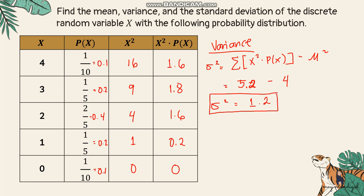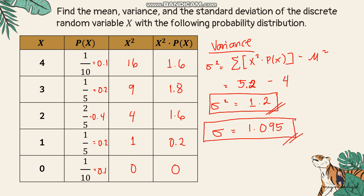To get the standard deviation, take the square root of the variance. The square root of 1.2 gives us 1.095. That is the standard deviation of our probability distribution.